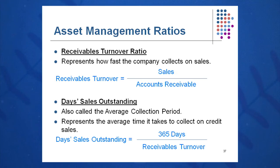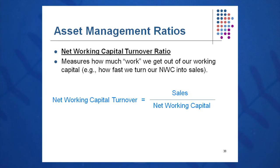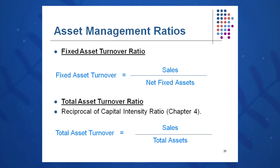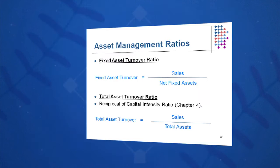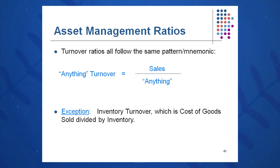Some other turnover ratios — look for the pattern here. Net working capital turnover is sales over net working capital. Fixed asset turnover ratio is total sales over net fixed assets. Total asset turnover ratio is sales over total assets. The pattern: anything turnover is sales over anything — with one exception. That exception is inventory turnover, which is cost of goods sold divided by inventory. So memorize sales over anything, remembering that one exception.